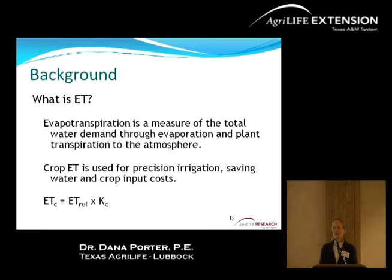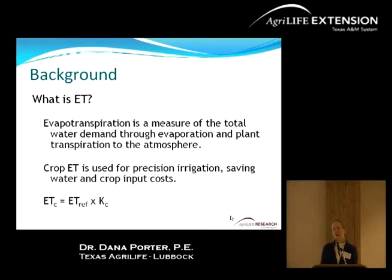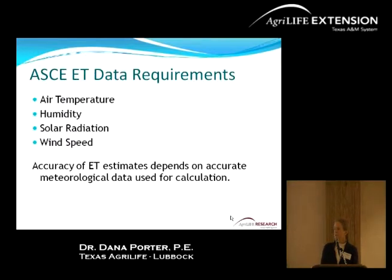What is ET? Hopefully you're familiar with evapotranspiration — it's the total crop water demand estimated from atmospheric water demand. It's the water removed by the plant through transpiration as well as evaporation from the soil and wet surfaces. We apply a computer model to estimate a reference crop evapotranspiration, then adjust that for crop-specific ET or crop water demand using a growth-curve-driven crop coefficient curve, so we can adapt it for different crops as data are available.